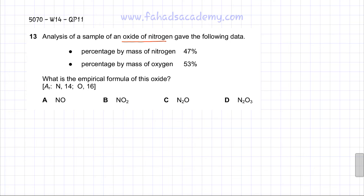Now, there's a simple two-step method of finding the empirical formula. You're going to make two columns, one for nitrogen and the other one for oxygen. We know the percentage mass. For nitrogen, the percentage mass given is 47%, and for oxygen, the percentage mass given is 53%.